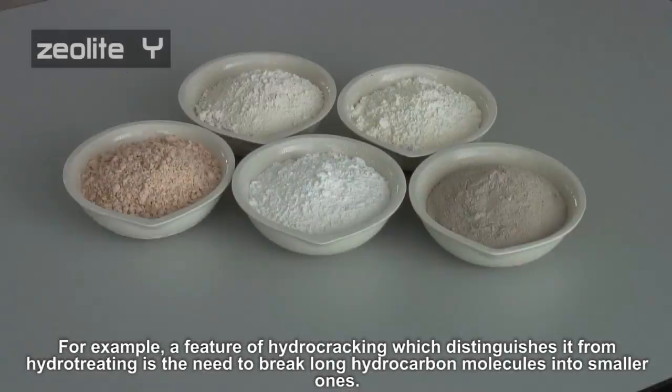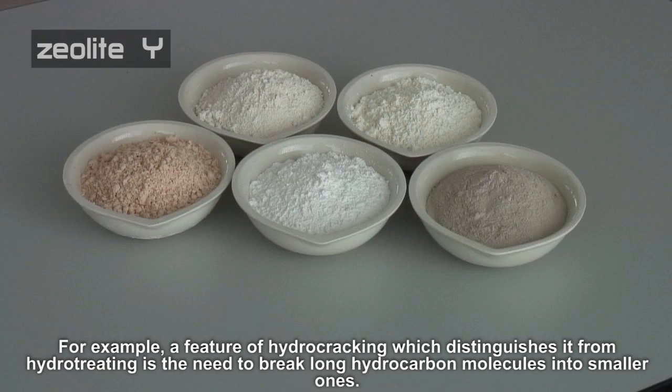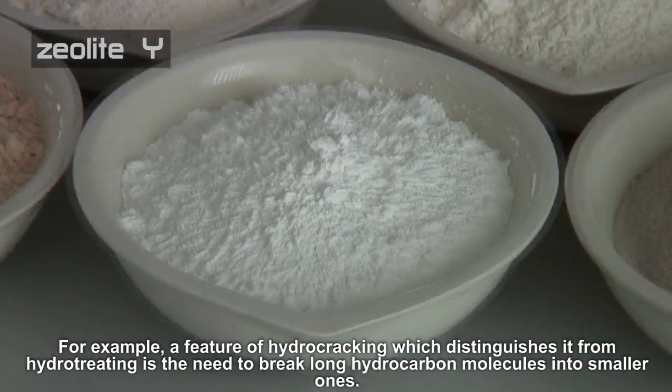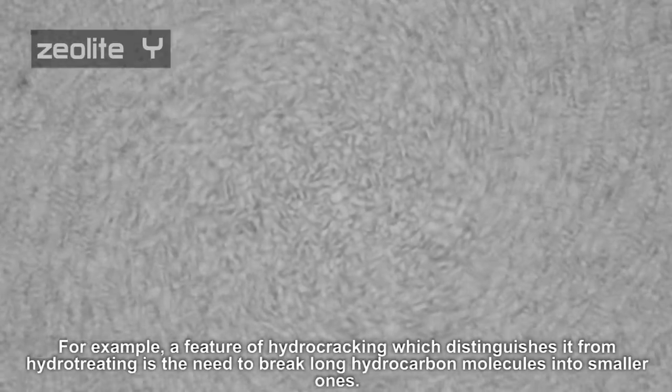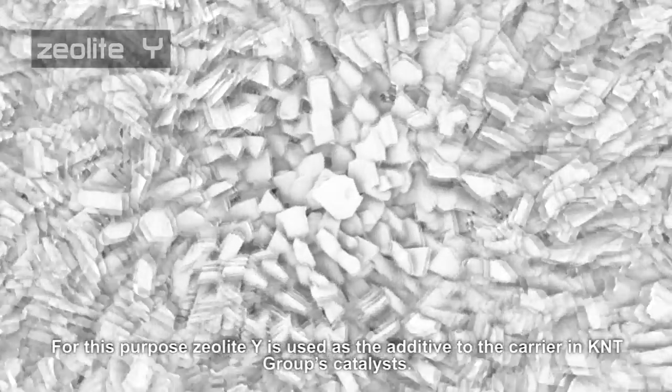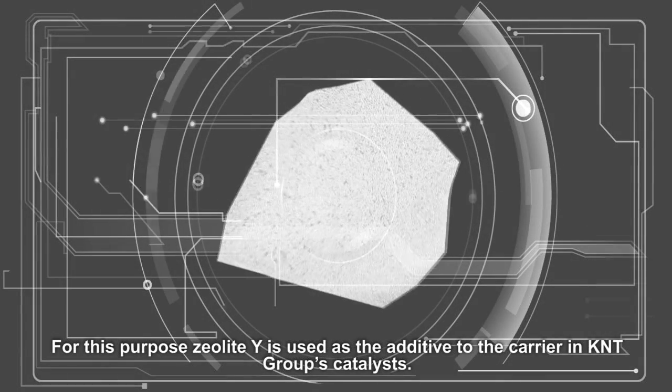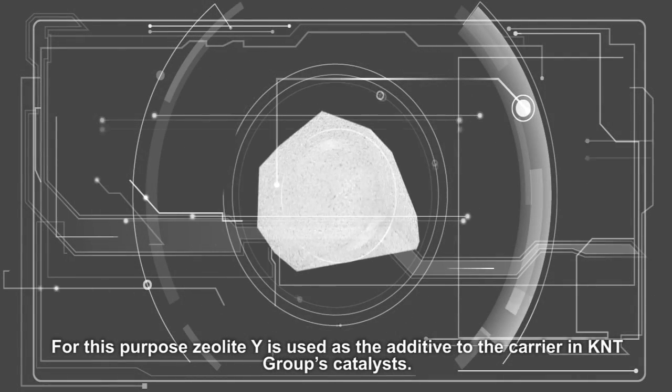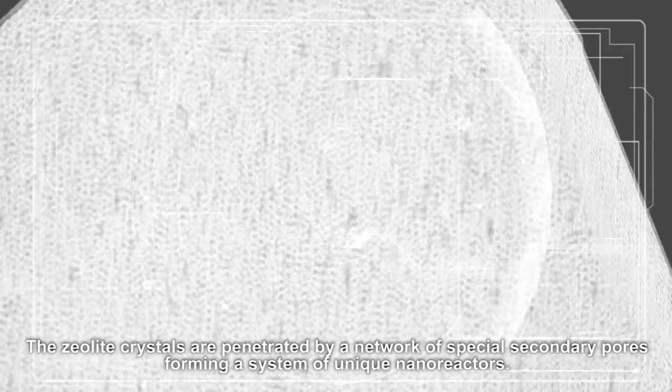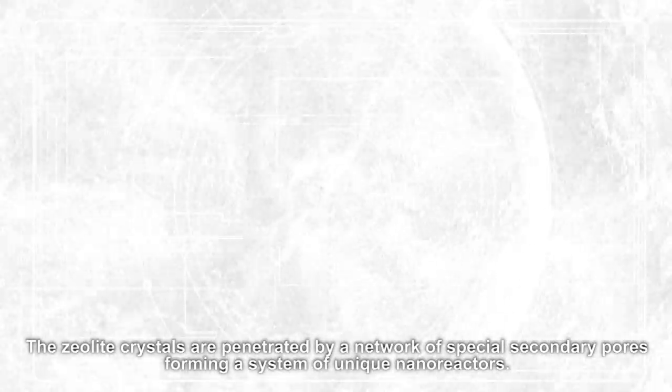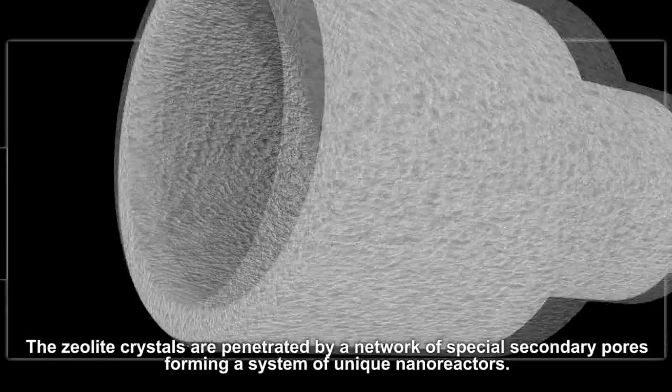For example, a feature of hydrocracking which distinguishes it from hydro-treating is the need to break long hydrocarbon molecules into smaller ones. For this purpose, zeolite Y is used as the additive to the carrier in KNT Group's catalysts. The zeolite crystals are penetrated by a network of special secondary pores, forming a system of unique nanoreactors.